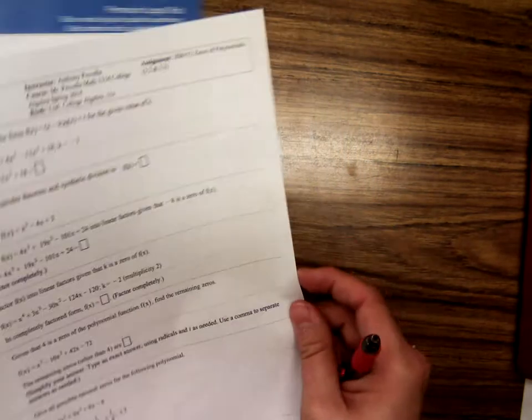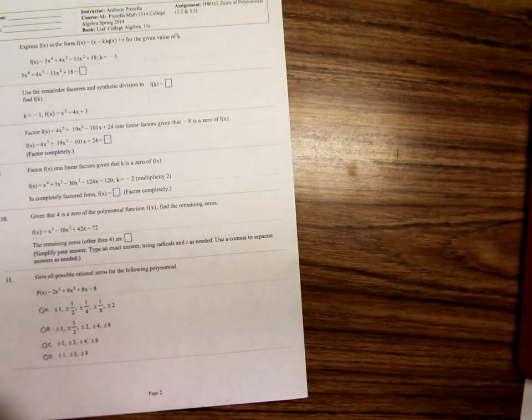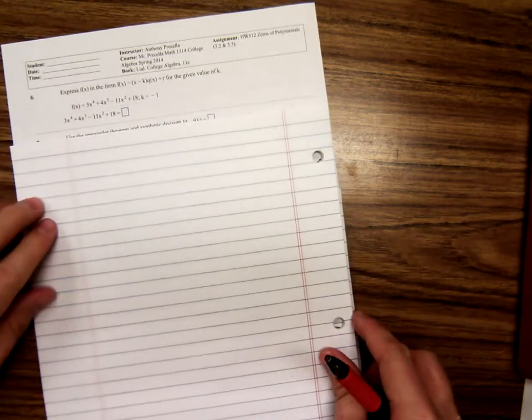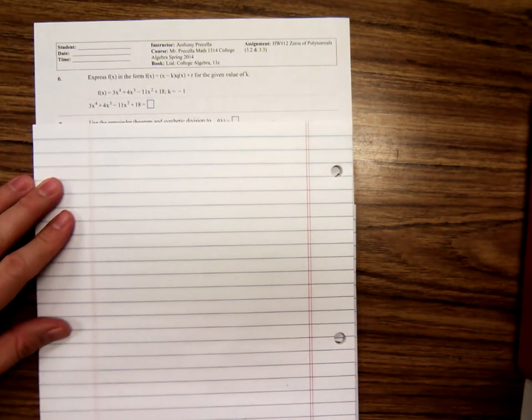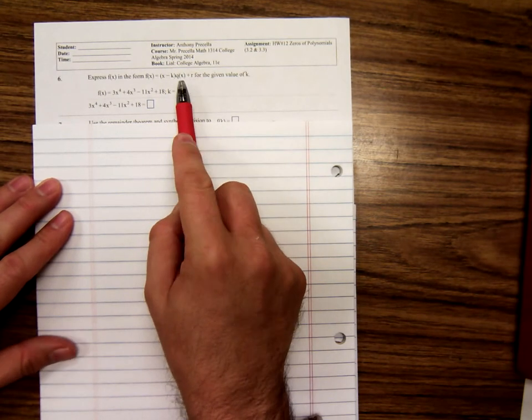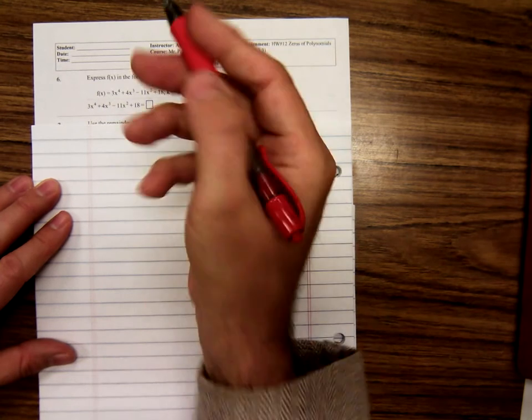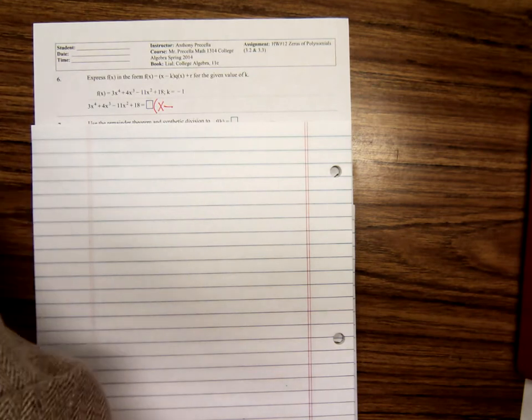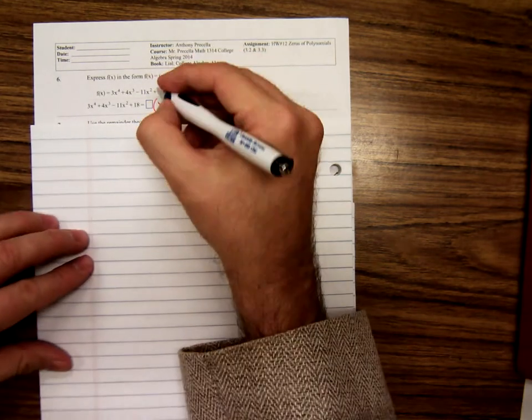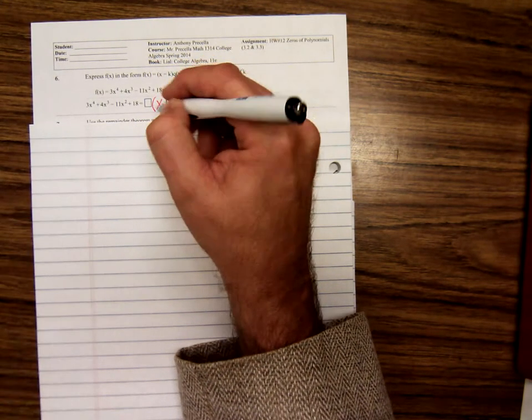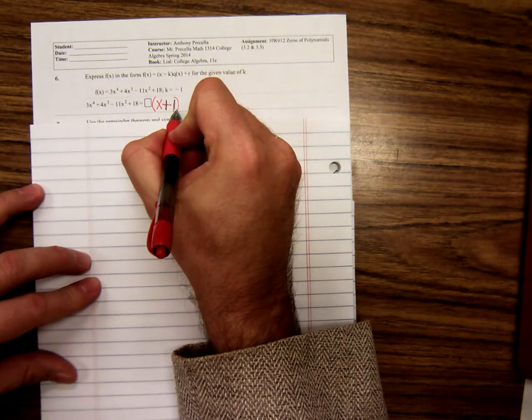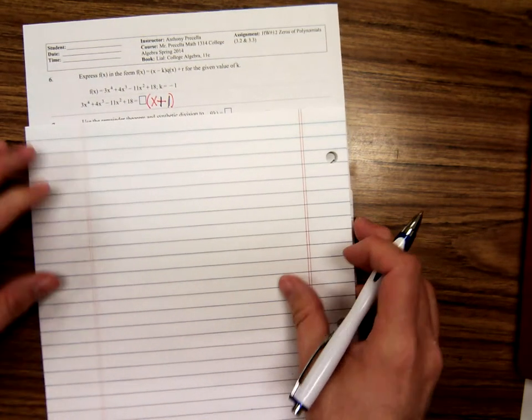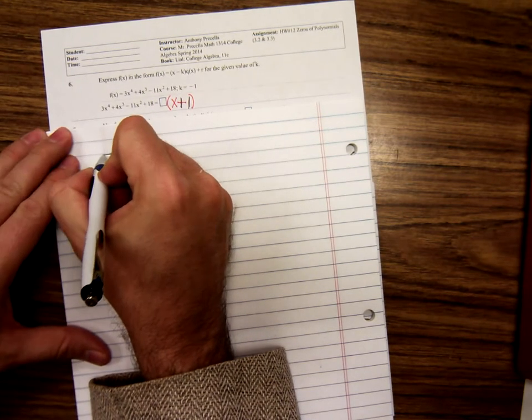And let's do another one like this. On this one, it doesn't actually give you the blanks to fill in. All it says is express it in that form, x minus k times q of x plus r. To get started, the x minus k we can already do. x minus, if k is a negative 1, then we have x minus a negative 1, or x plus 1. So that's the x minus k part. Now we need that quotient part. To do the quotient part, we got to use the synthetic division.